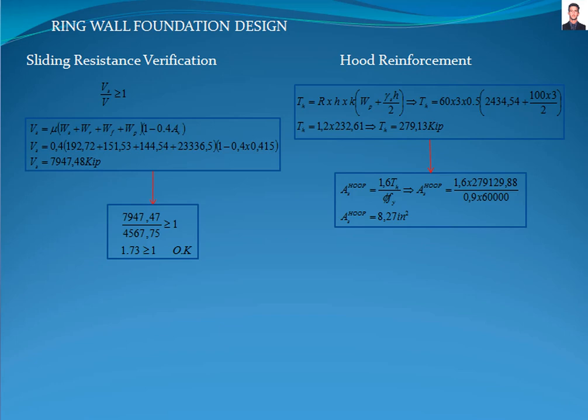Now we are going to verify the sliding resistance according to section E7.6 of the American Petroleum Institute 650 standard, where Mu is the friction coefficient that cannot be taken as more than 0.4, and the result is 7,947.48 kips. The sliding resistance is greater than the base shear — the verification passed.